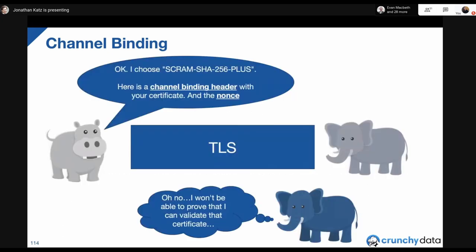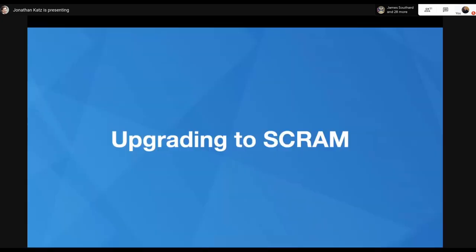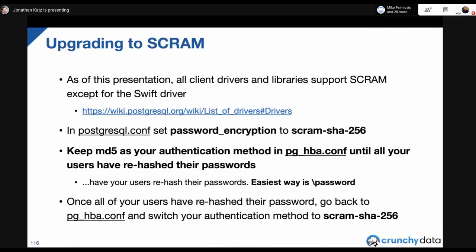With channel binding, a rogue blue elephant is unable to prove it can validate the certificate being used, so channel binding keeps the rogue server out. At this point you should be convinced it's time to upgrade to SCRAM, particularly if you're on Postgres 10 or above. In one more Postgres release cycle, Postgres 10 will be the oldest supported version, meaning everything supported will have SCRAM.